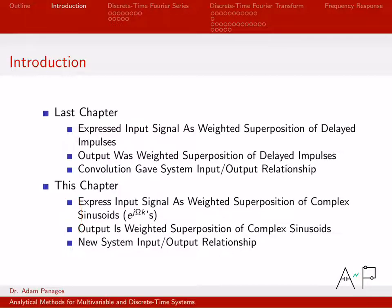We're going to come up with a new input-output relationship. Previously it was convolution. In this chapter, when we work in the frequency domain, the input-output relationship is much simpler — it's just multiplication. So I'll be able to figure out the output signal in the frequency domain just by doing multiplication. That's where we're going — not there yet, but just giving you an outline of what this chapter is all about.